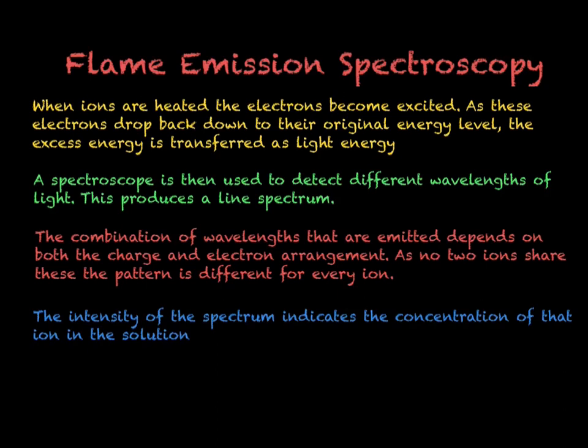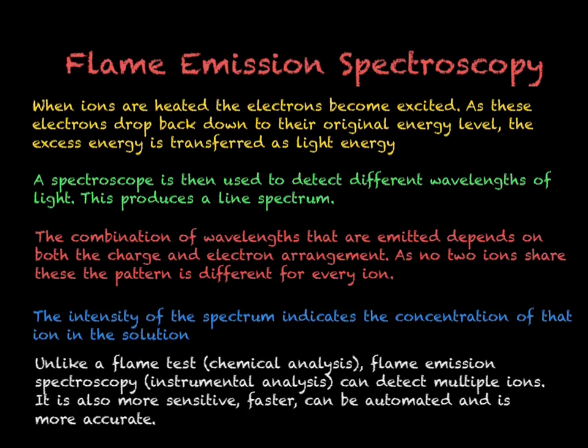The intensity of the spectrum is used to tell us the concentration of the ions in the solution — the higher the intensity, the higher the concentration. This means that line spectra can be used to identify not only the ions present, but also to calculate their concentrations. We can therefore use flame emission spectroscopy to identify different ions in a mixture, making it far more useful than a flame test, which will only tell us about one single metal ion.